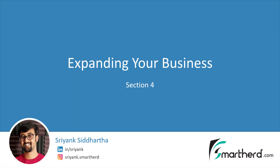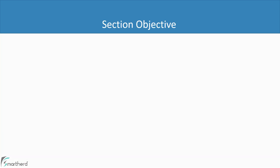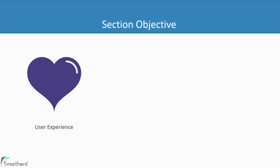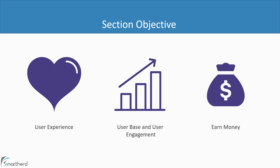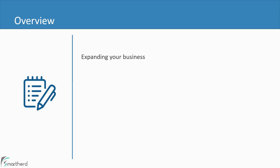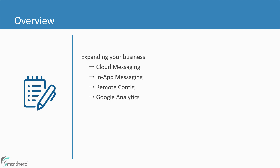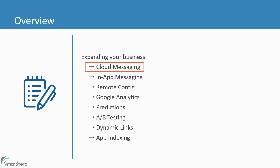Now it is time to dive into the next section — how to earn money from our applications by increasing the user base and user engagement. The core objective of this section is to explore Firebase products which will help us increase the user experience, grow the user base and user engagement, and therefore make more money. We will explore Firebase services such as Cloud Messaging, In-App Messaging, Remote Config, Google Analytics for Firebase, Predictions, Firebase A/B Testing, Dynamic Links, and Firebase App Indexing.